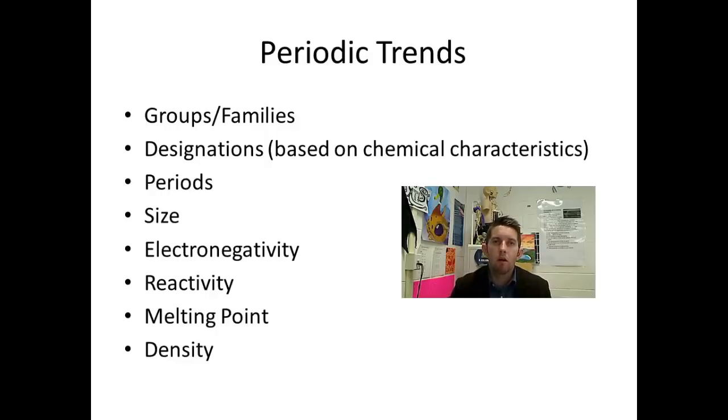You can tell a lot about an element based on its location on the periodic table. The trends that you'll see when we're traveling and navigating through the periodic table, you'll see that they're arranged according to groups or families. You'll see that they're designated based on their chemical characteristics, that some are located in a certain way because they behave chemically different than others. You'll see that periods, what period it is in tells you a lot.